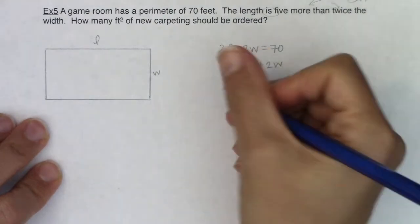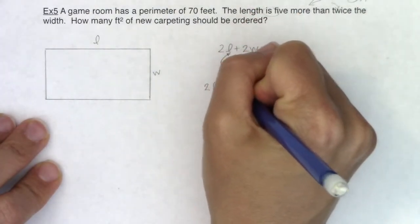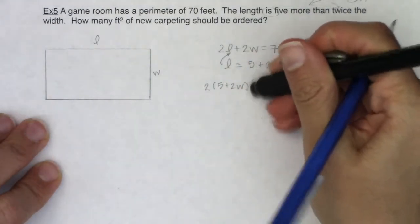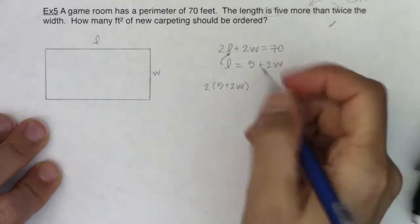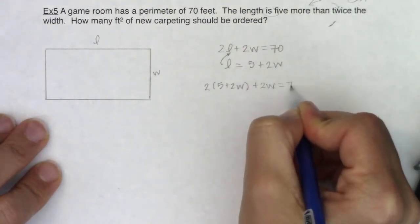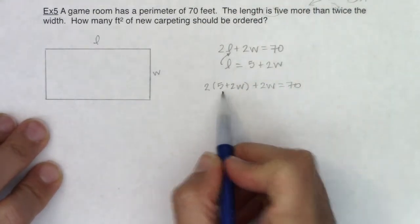I'm going to plug the length into here, so instead of 2L I'm going to write 2 times quantity 5 plus 2W. We have 2L plus 2W should equal 70, and instead of L I'm writing 5 plus 2W.